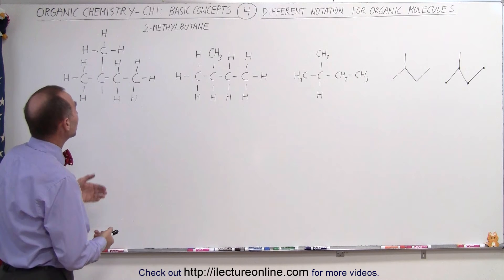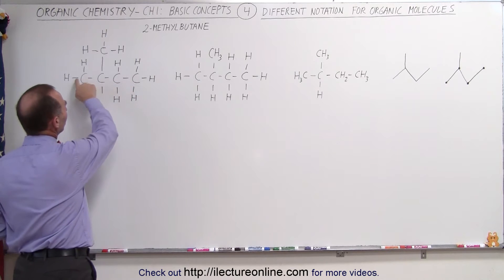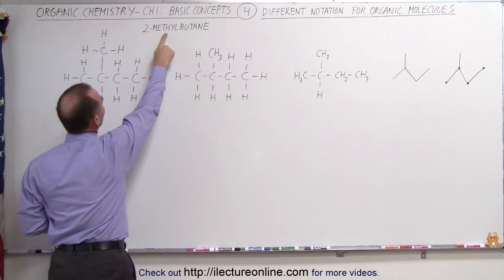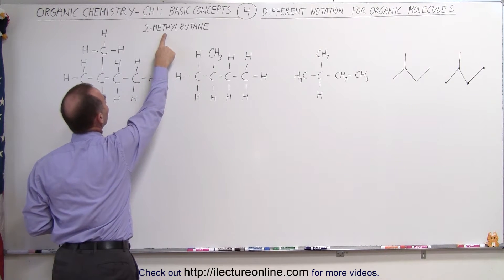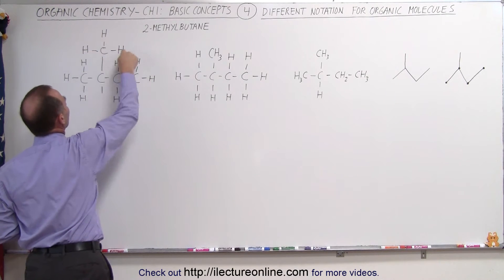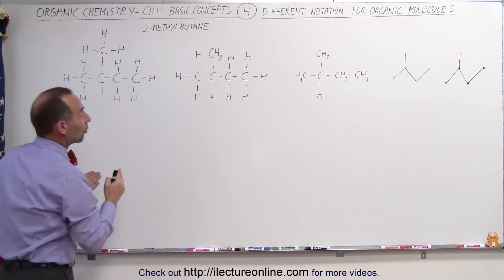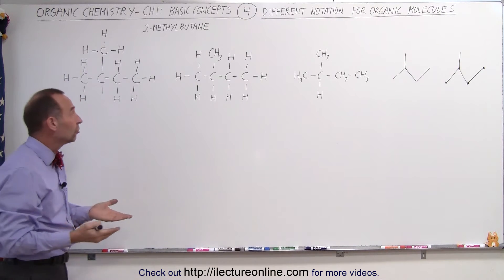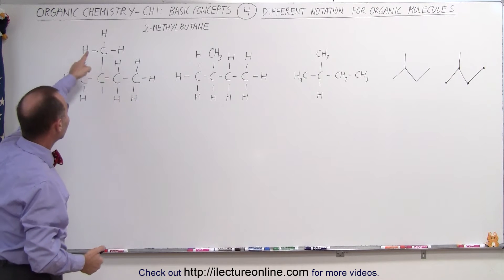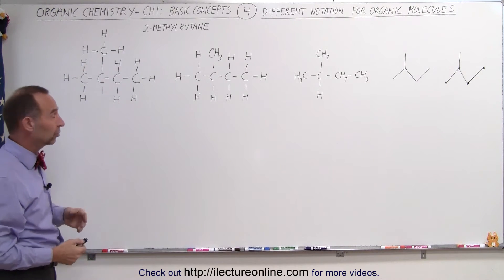For example, when we take 2-methylbutane. Butane means we have a chain of four carbons that forms butane and there's a methyl functional group attached to the second carbon. So here we have the second carbon and there's a methyl functional group attached there. So if we want to draw out all the carbons and all the hydrogens, then yes, there's a total of five carbons and five times two plus two, that would be 12 hydrogens.